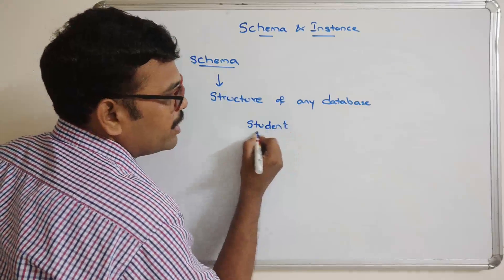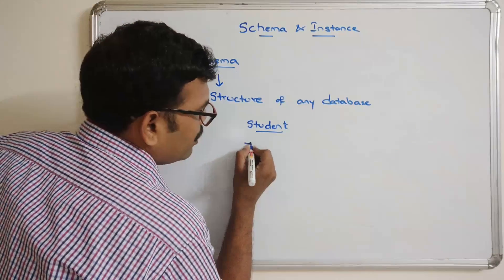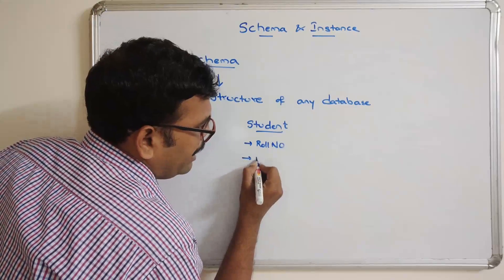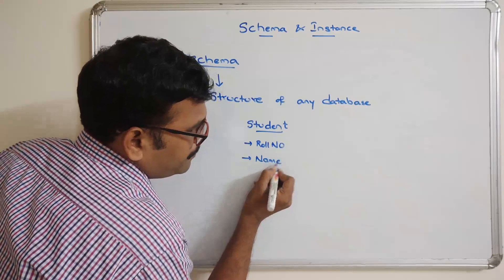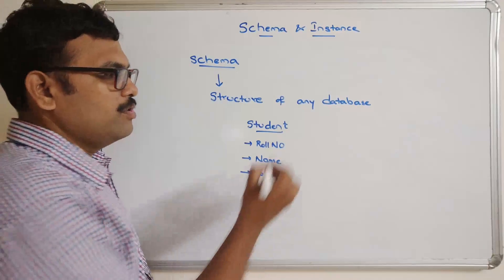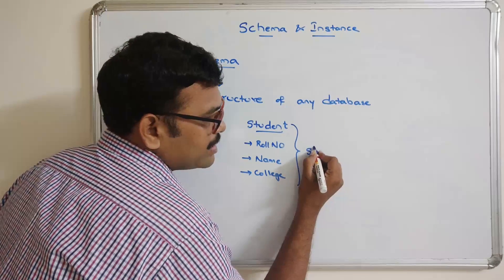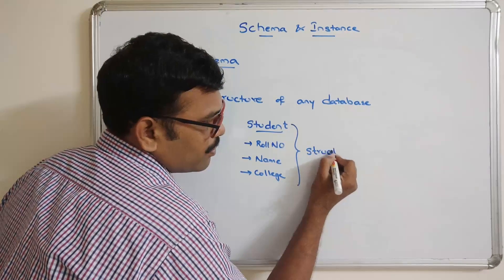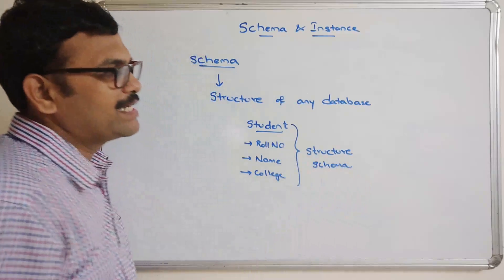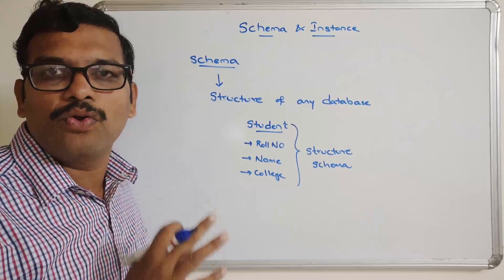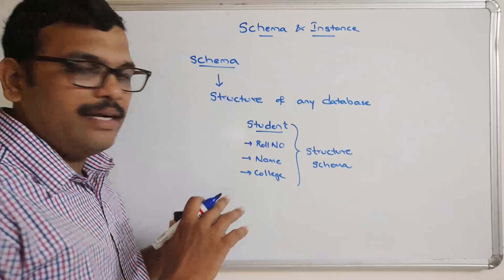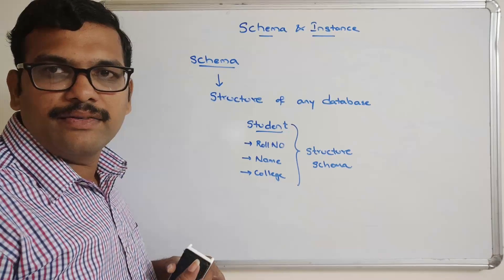A student can be identified using roll number, name, college, etc. This is called a structure, and here we call it a schema. Schema is the structure which the database follows.